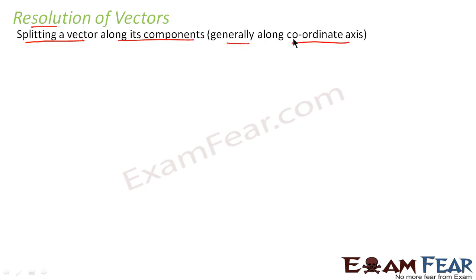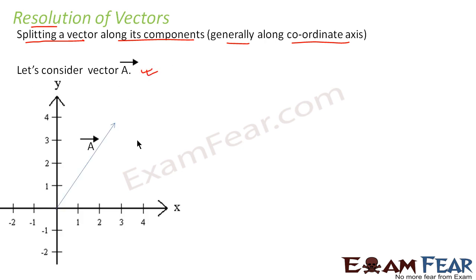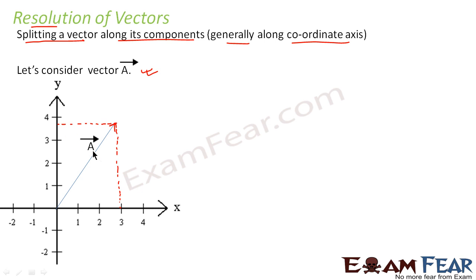Let us consider that we have a vector a. If we say that this vector a is represented graphically, let us suppose its position is represented by some point such that its value along the y-axis and its value along the x-axis are determined by this point. So this is my vector a, and I want to write a in terms of its components along the x-axis and y-axis.